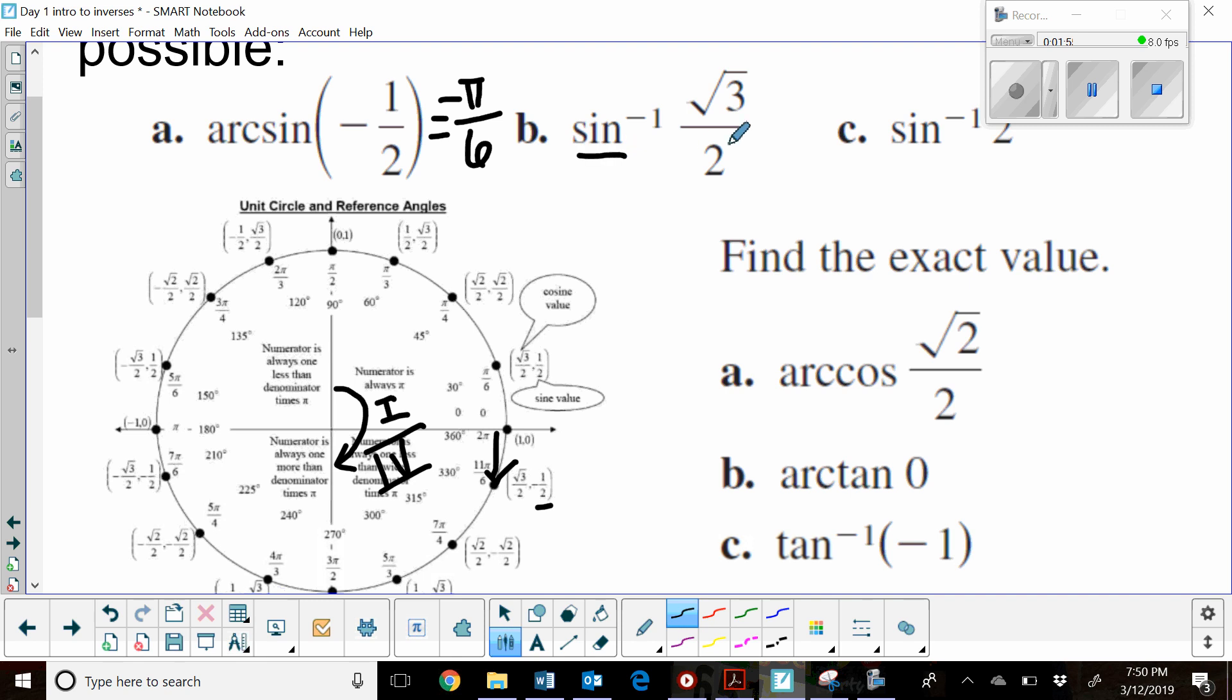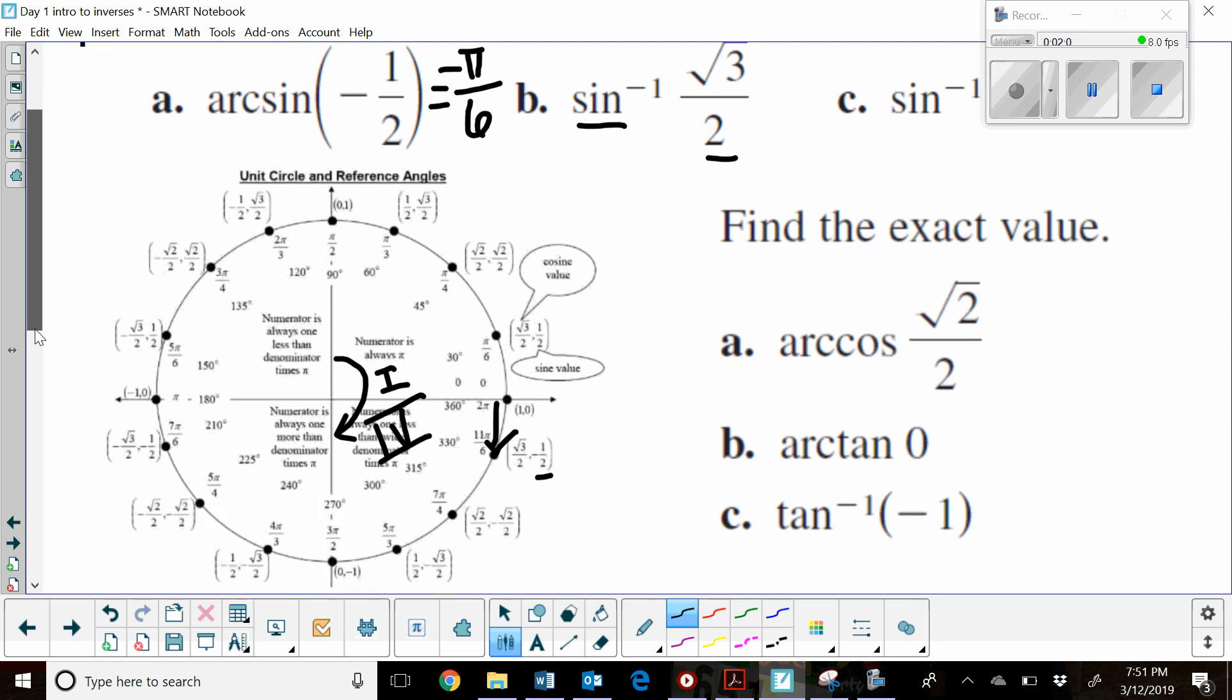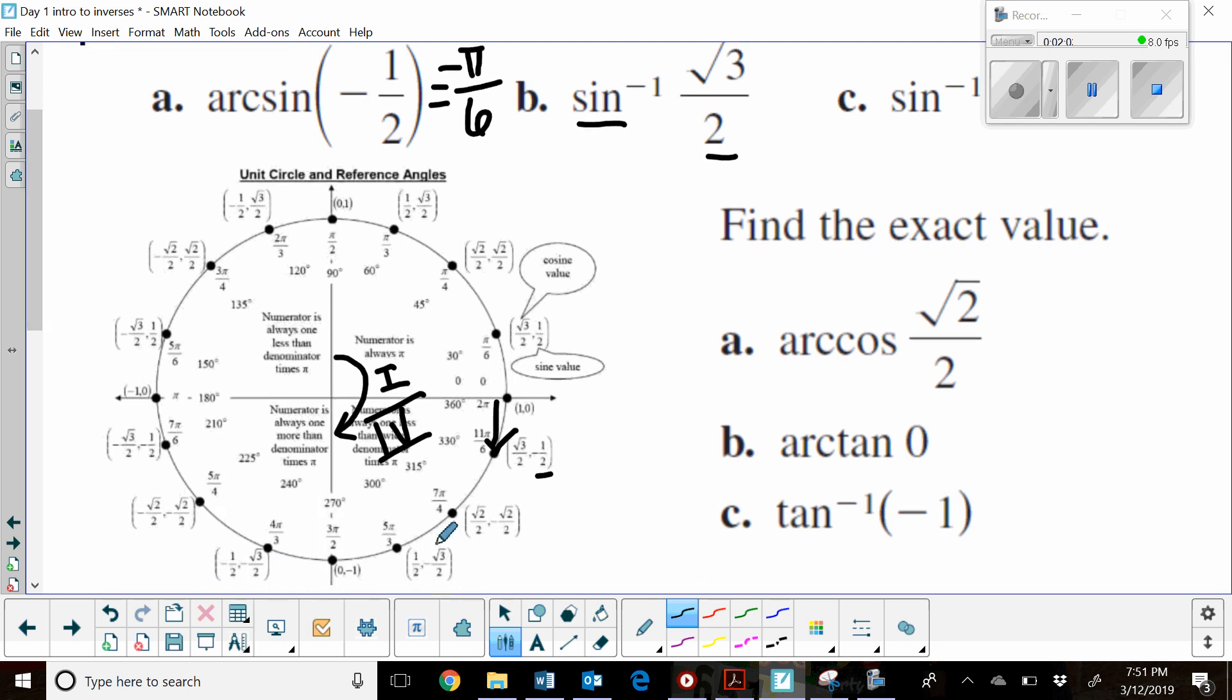Now let's look at the inverse sine of √3/2. Look for a y value that is positive √3/2. Here's a negative √3/2—it's not that one. It's this one up here. This one has a positive √3/2, and that one ends up being in quadrant 1. So the answer is either π/3 if you're looking at radians, or 60 degrees.